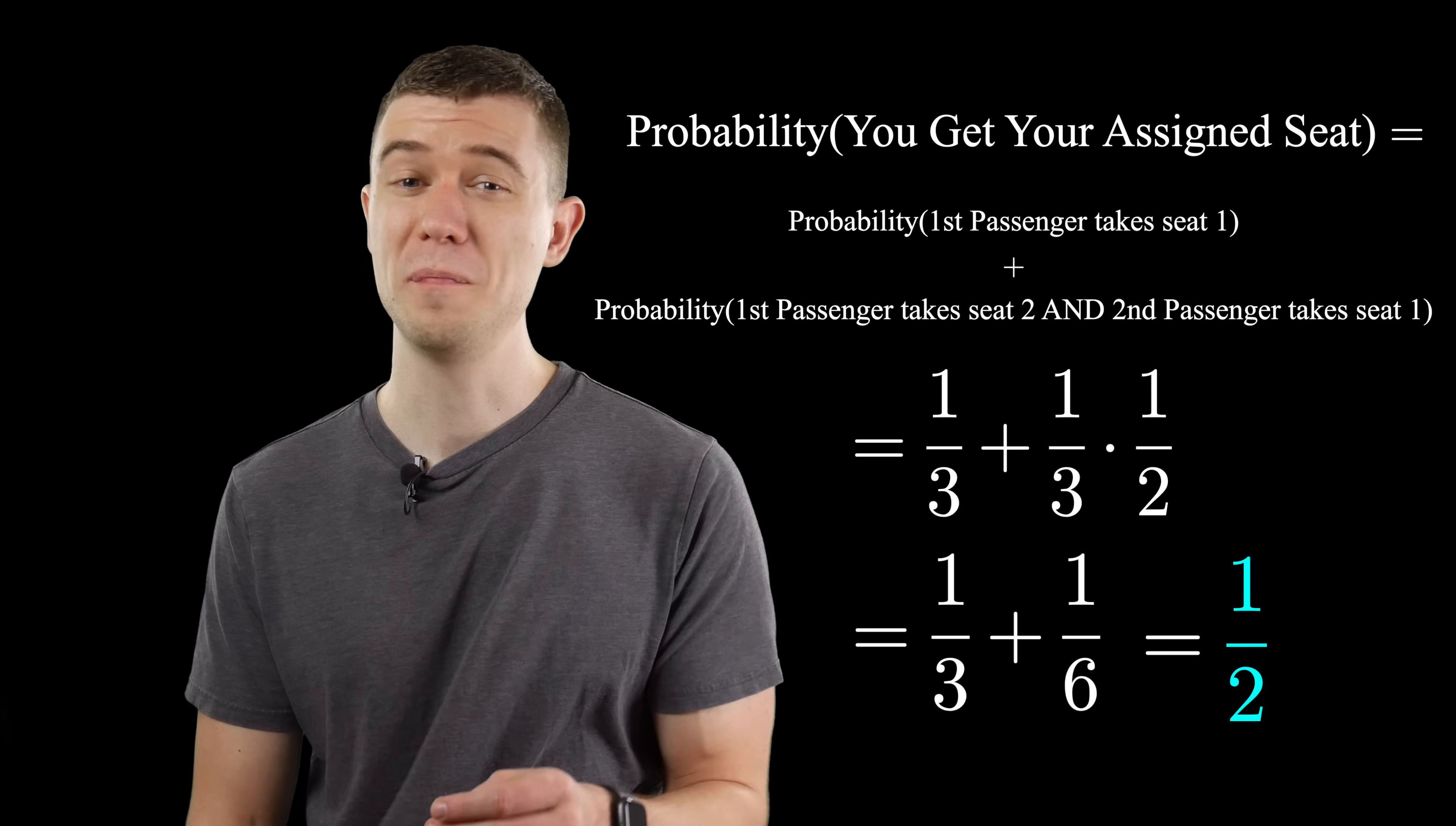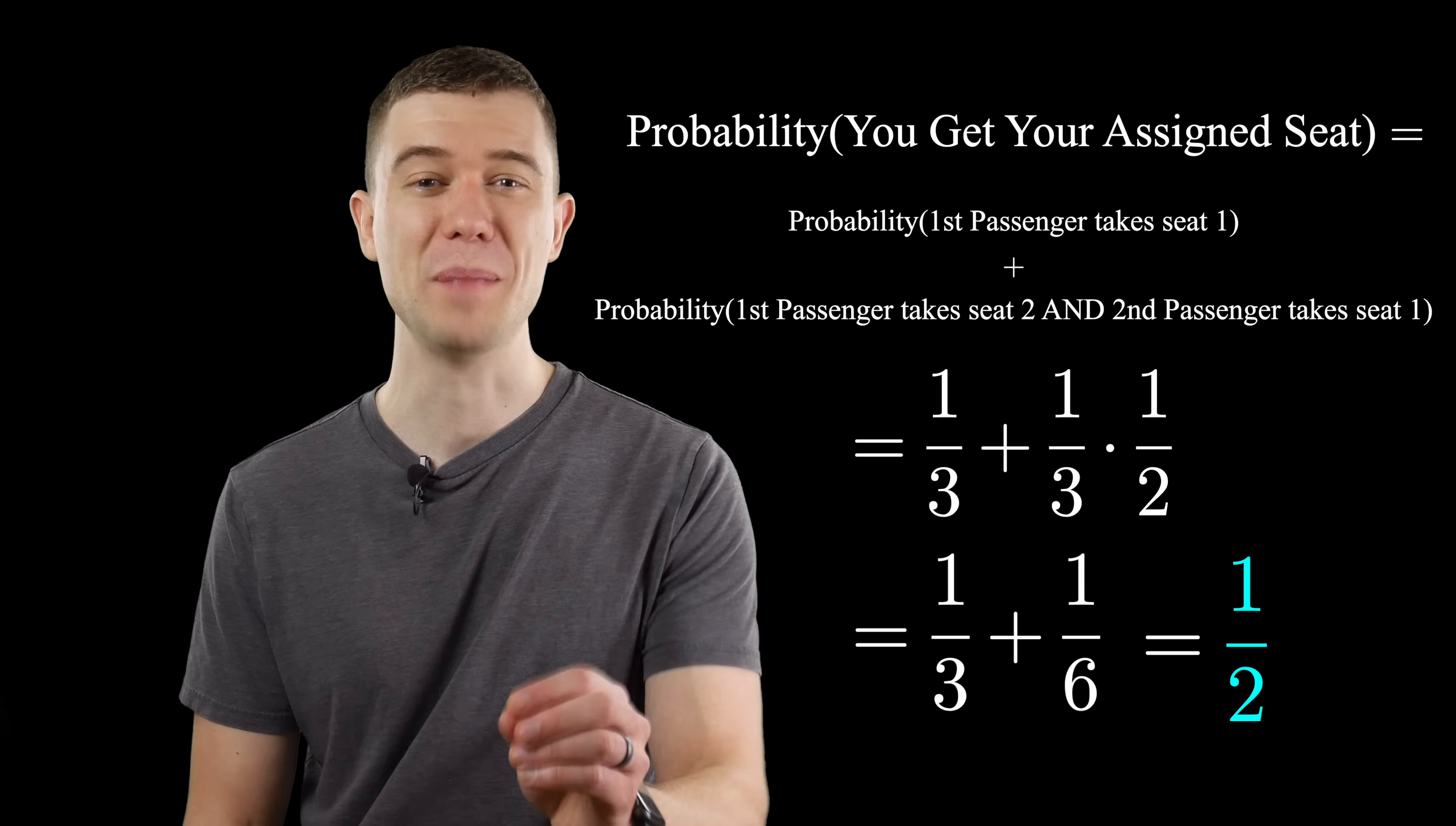We could do this with four passengers and so on, but the pattern is going to hold true. Basically, three things can happen. The first passenger takes their own seat, meaning everyone sits in their assigned seat, including you.